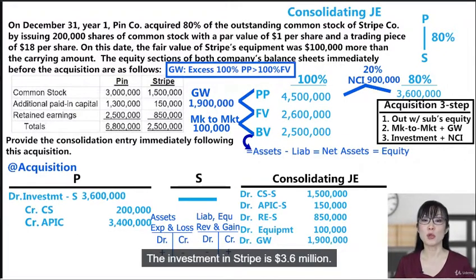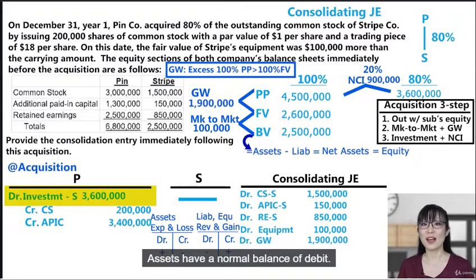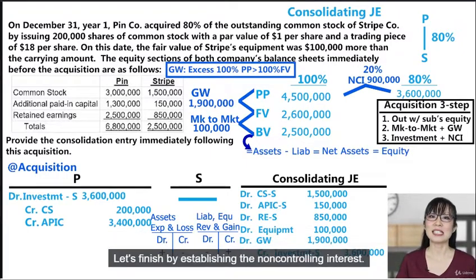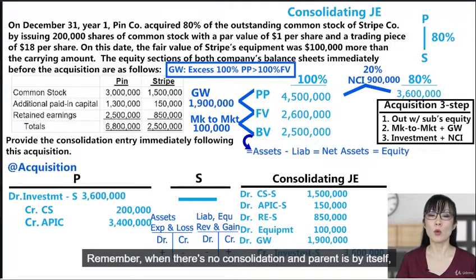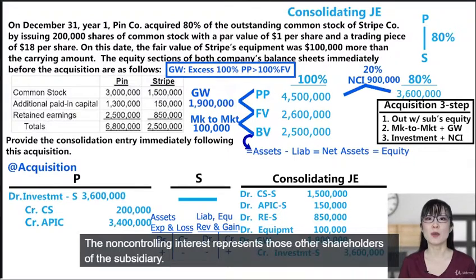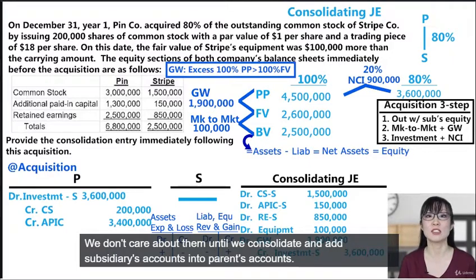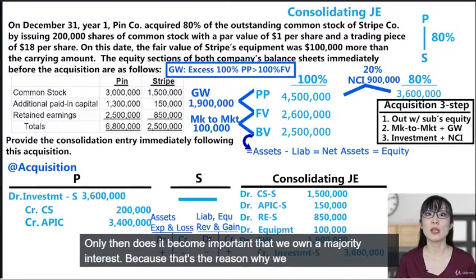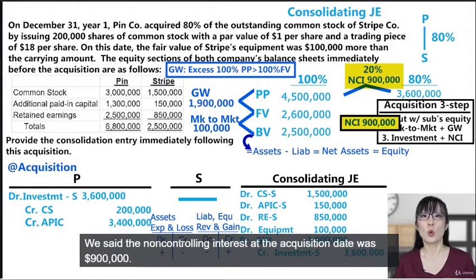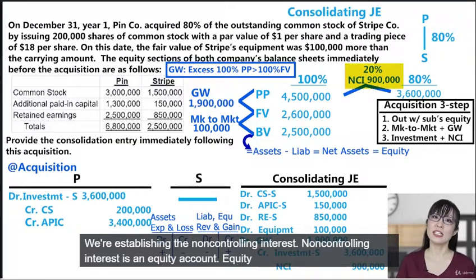Step 3 — get rid of the investment and establish the non-controlling interest. The Investment in Stripe is $3.6 million — assets have a normal debit balance, so to get rid of it we credit $3.6 million, eliminating it to avoid double counting. Now we establish the non-controlling interest: the NCI at acquisition date was $900,000. Non-controlling interest is an equity account — equity increasing is a credit of $900,000. We set the non-controlling interest only when we consolidate, because that's when we add the sub's accounts into the parent's accounts.